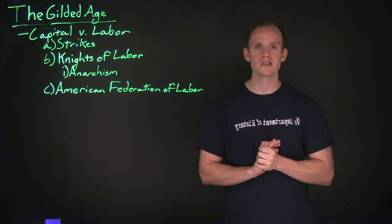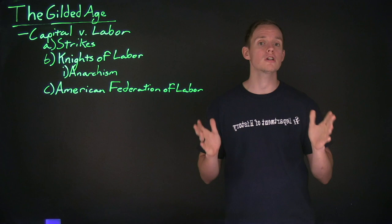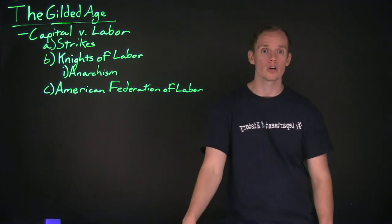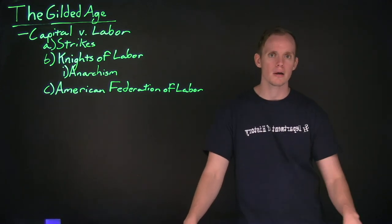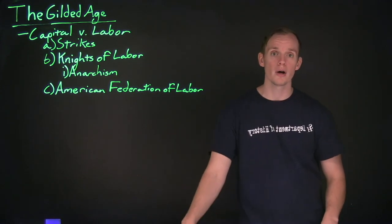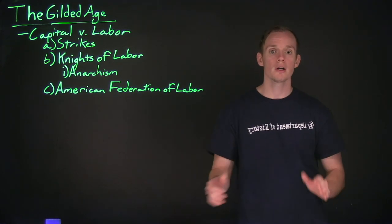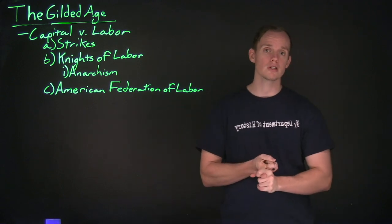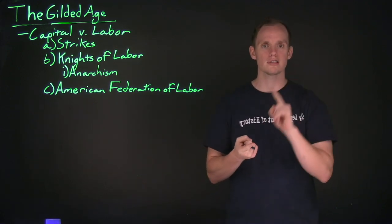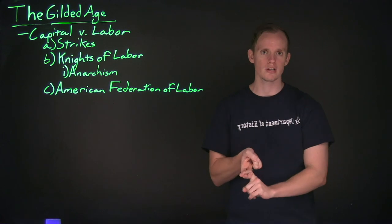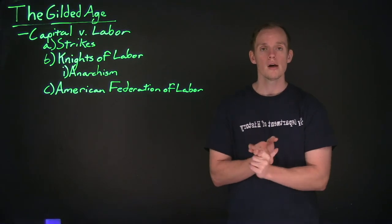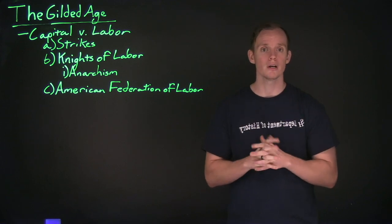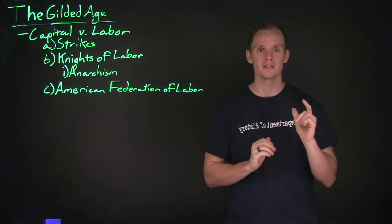That brings us to the end of our discussion of the Gilded Age, though we will continue to discuss its themes — how industrialization is going to impact American workers in the Northeast, the American South, and the West — in future lectures. Make sure that before you watch the next lecture, you go out and complete all outstanding assignments, read all the chapters in the textbook, as well as any readings for the week. If you have any questions in the meantime, feel free to reach out. Everybody go out, be safe, and I'll see you all in the next lecture.